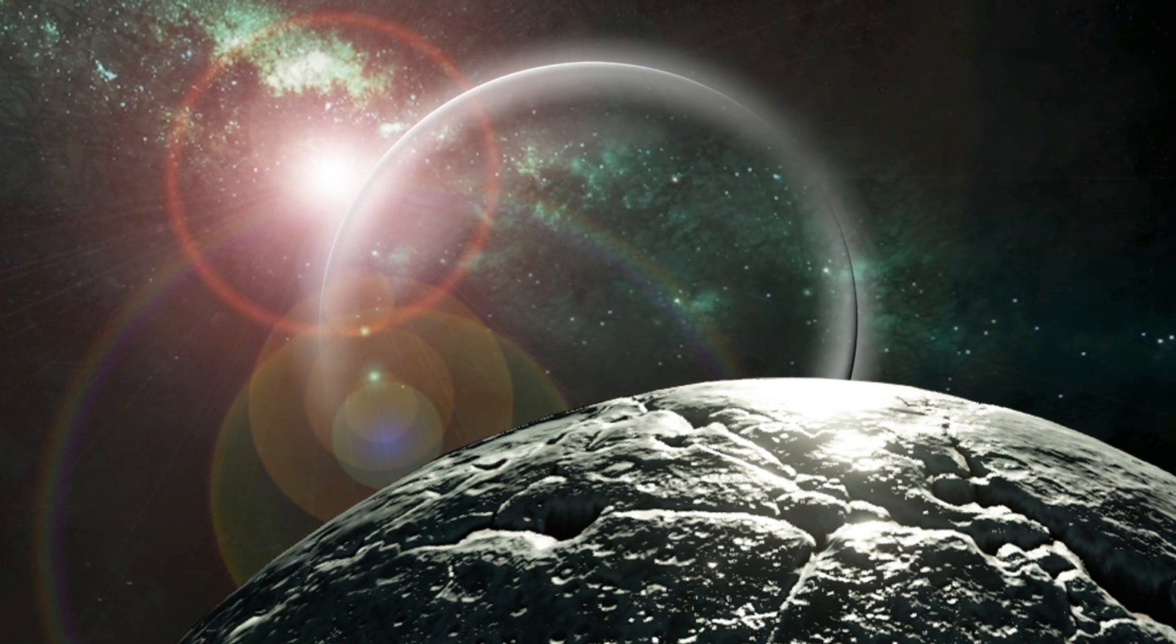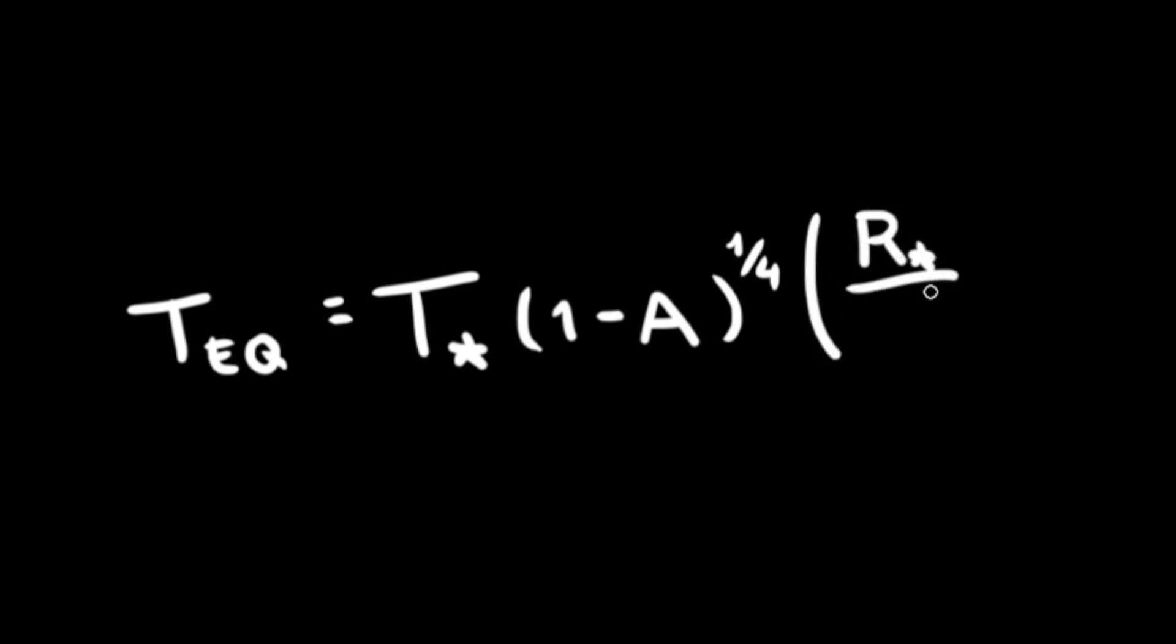But to calculate how big this lens would need to be, we need to start with an equation that should look familiar to those who have been watching my videos for a while. The planetary equilibrium temperature equation. This equation lets you calculate the surface temperature of a planet, assuming that the only source of energy is the star that the planet is orbiting, in this case Kerbol. T star is the temperature of the star, R star is the radius of the star, A is the reflectivity of the planet or what we call albedo.